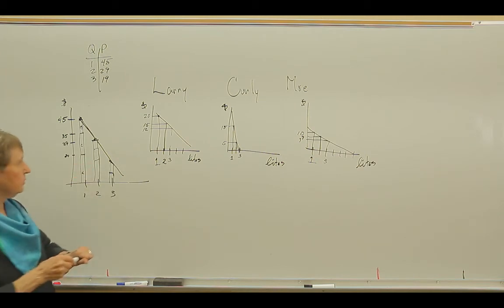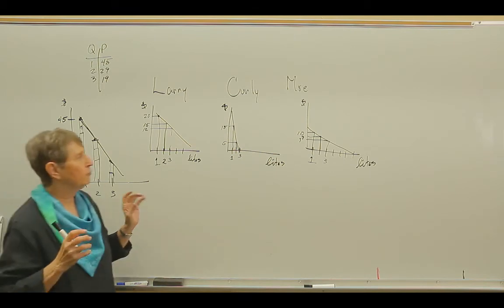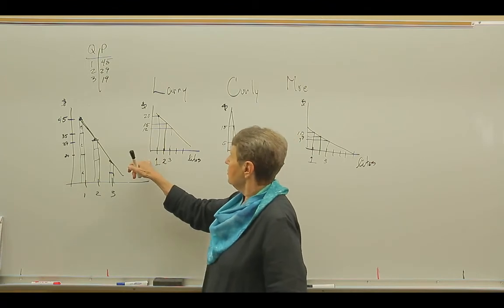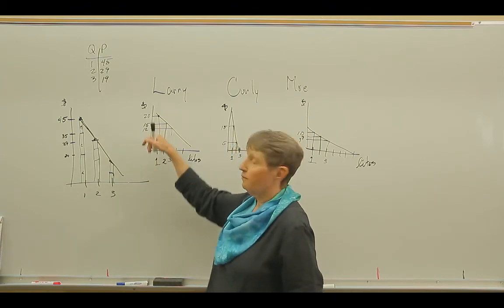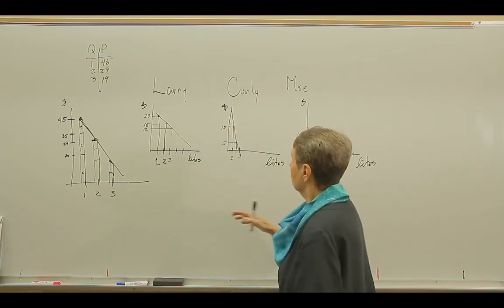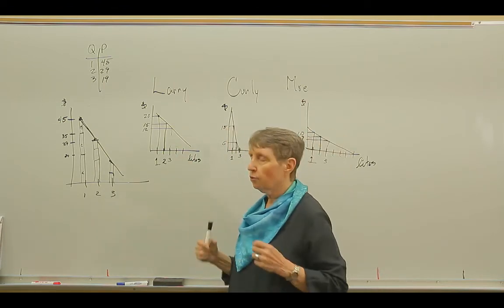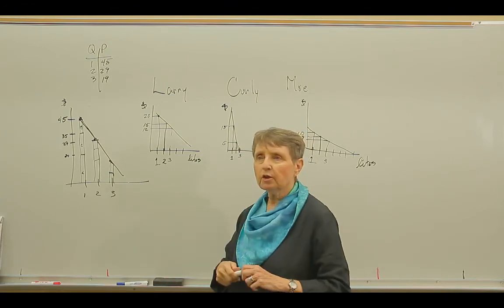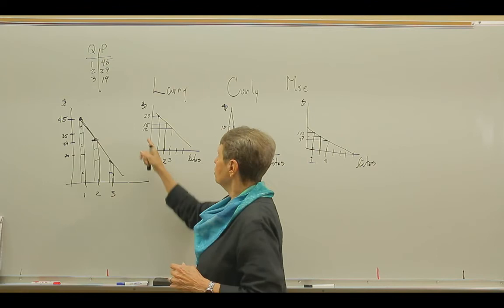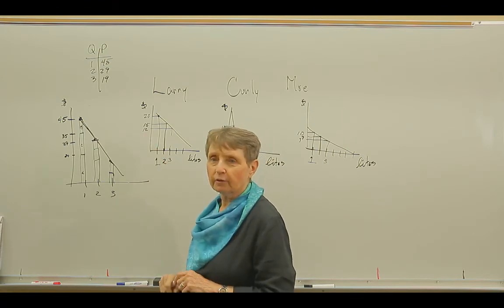So then the question is, okay, assuming people have revealed their true preferences. In other words, this is really how much Larry values the street lights. This is really how much Curly values the street lights. And Moe. Assuming they've revealed their true preferences, then what we could do to fund these street lights is charge them according to their preferences.